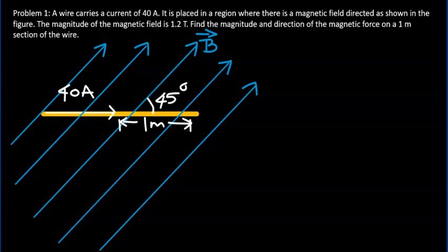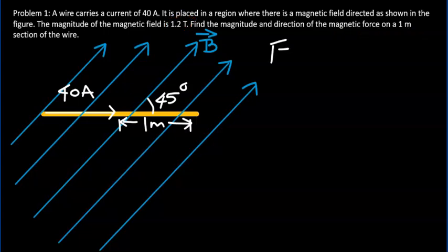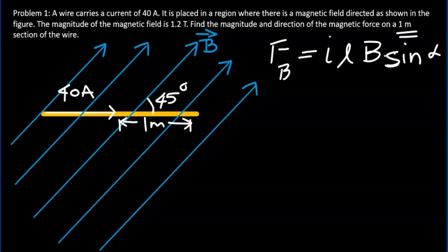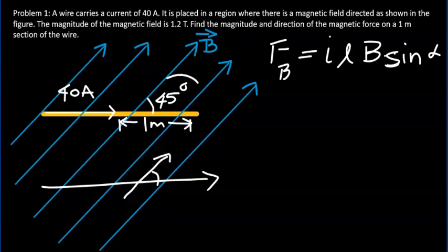Problem 1: A wire carries a current of 40 amperes and is placed in a region of uniform magnetic field as shown, with magnitude 1.2 tesla. Find the magnitude and direction of the magnetic force on a 1-meter section of the wire. The magnitude is given by current times length times magnetic field times sine of the angle between the length vector and the magnetic field. The length vector follows the direction of the current, and the magnetic field is at 45 degrees to it, as given.